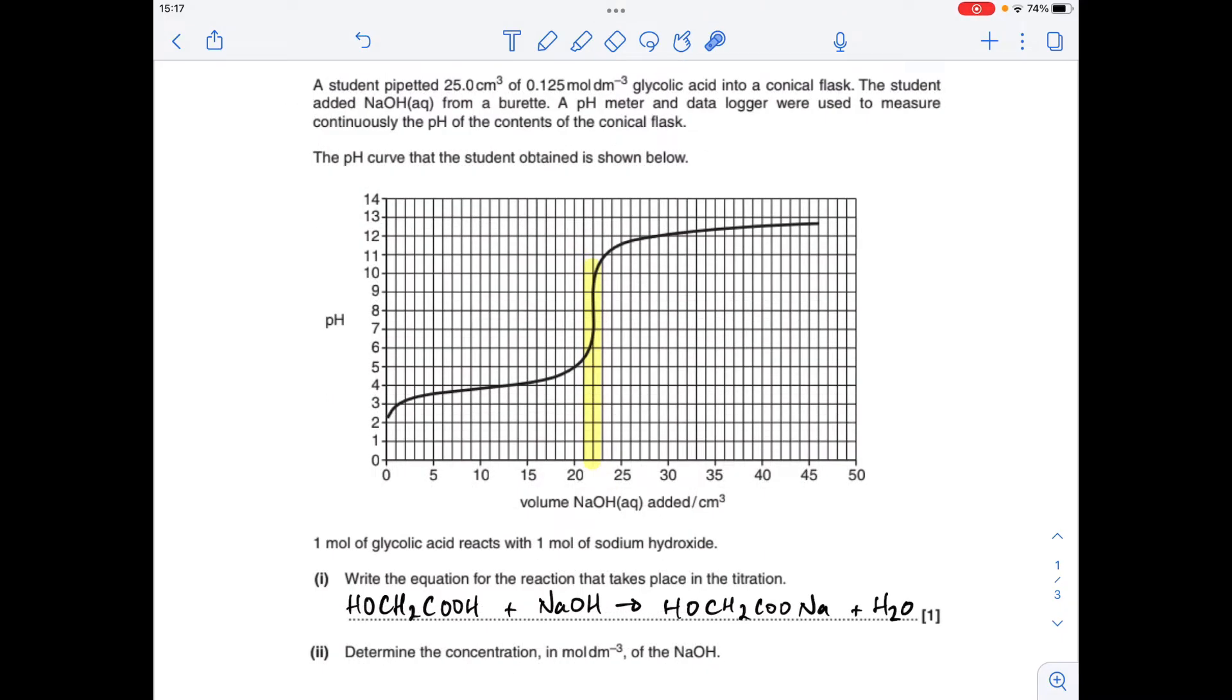Next part, we've got to determine the concentration of the sodium hydroxide in moles per decimeter cubed. You'll notice I've highlighted the vertical section of the pH titration curve. That's actually going to tell us the volume of sodium hydroxide that was needed in the titration. So the titre was 22 centimeters cubed.